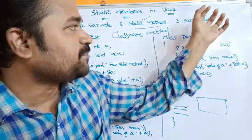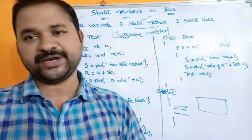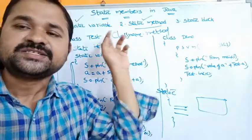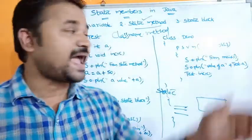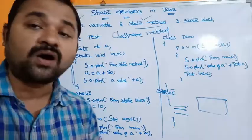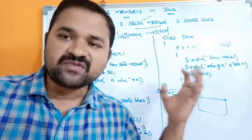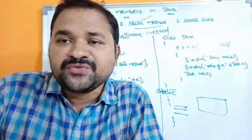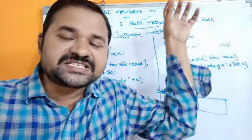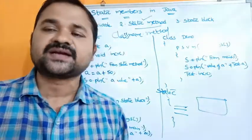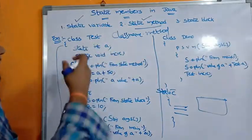When will the static block be executed? Whenever the class is loaded into memory, the static block will be executed — just like memory is allocated for static variables when the class is loaded. We know that execution of a Java program starts from the main method, but before execution the corresponding class is loaded into memory. So if there is a static block, it will be executed first, and after that execution starts from the main method.